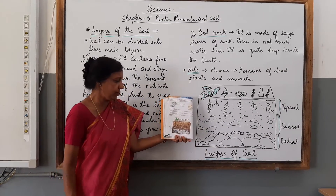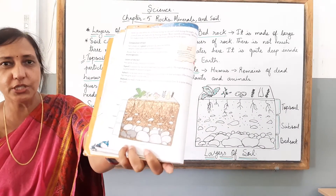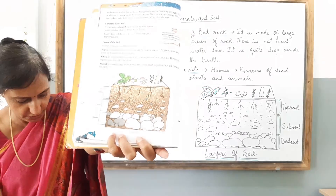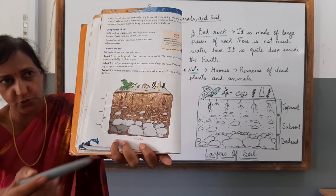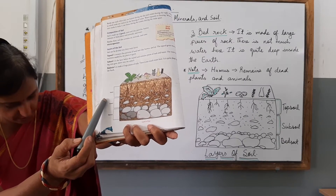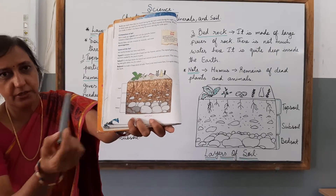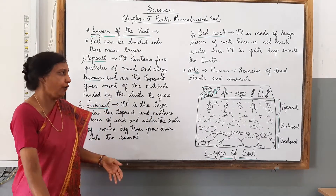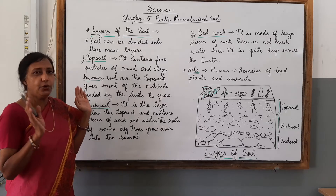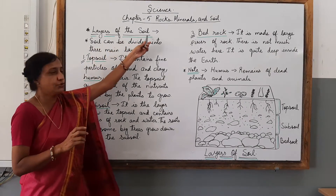I have drawn a diagram similar to the one in your textbook, to help you see and observe what areas are shown here. The first layer is the topsoil, then the subsoil, then the bedrock. Here you can observe the kinds of layers of soil that we have discussed.